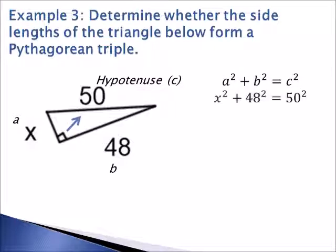So after we take our Pythagorean theorem, we will substitute x for a and 48 for b. So we are left with x squared plus 48 squared equals 50 squared.